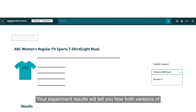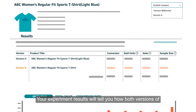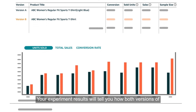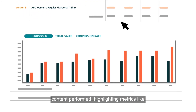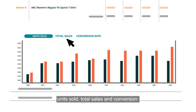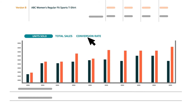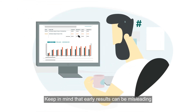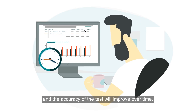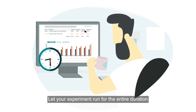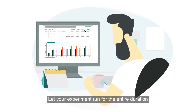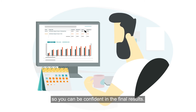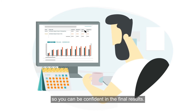Your experiment results will tell you how both versions of content performed, highlighting metrics like units sold, total sales, and conversion. Keep in mind that early results can be misleading and the accuracy of the test will improve over time. Let your experiment run for the entire duration so that you can be confident in the final results.